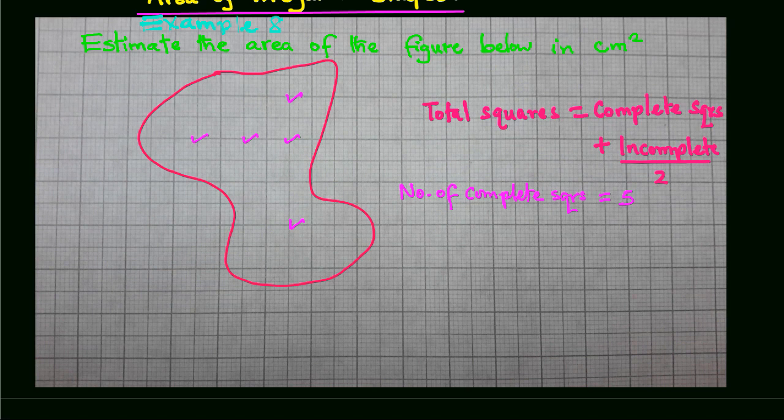Incomplete squares: five, three, two, five, three, and one, three, four here, here.